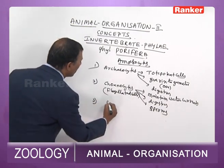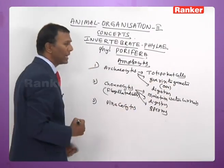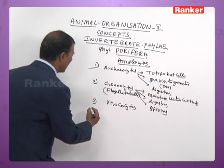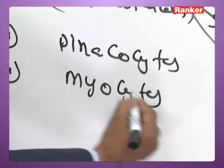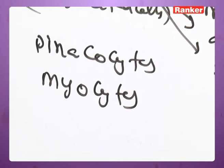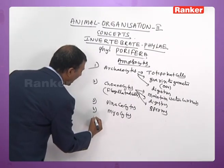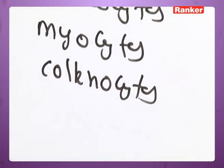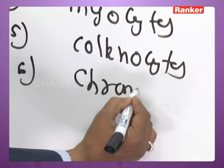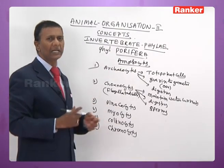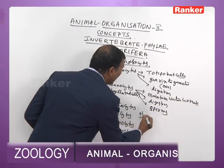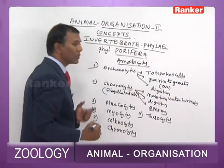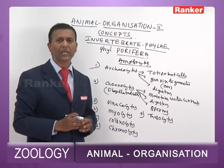Pinacocytes form the outer layer perforated by dermal ostia, which are the modified porocytes. Myocytes give rise to connective tissue fibers of sponges. Colonocytes also give rise to connective tissue fibers of the body wall. Chromocytes impart colors to the sponges. Thesocytes store reserve food material.